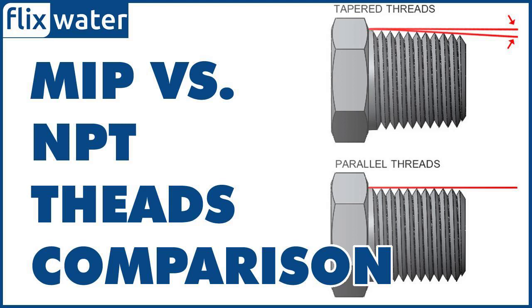MIP fittings are commonly made out of iron. However, they can also be made out of a variety of materials like copper, steel, and brass. Unlike MIP fittings, NPT threads are most commonly made out of heavy-duty plastics like PVC.